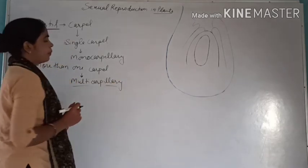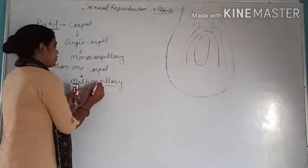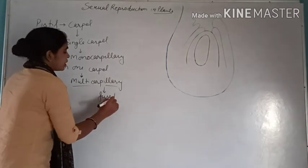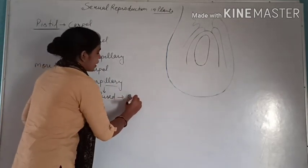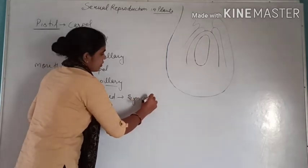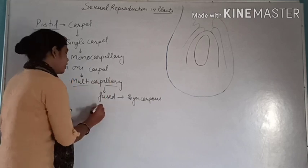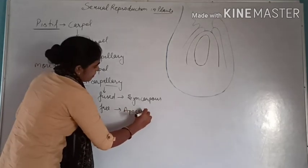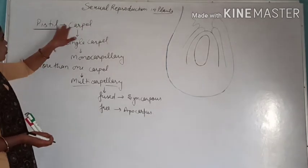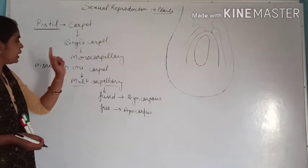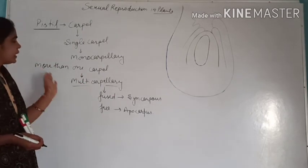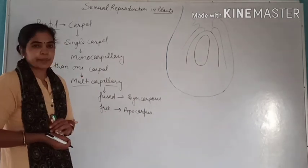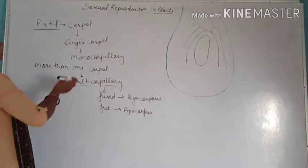Now in case of a multicarpillary flower, if the carpels are fused, in that case we will call them syncarpous. And if the carpels are free, then apocarpous. So to summarize: single carpel is monocarpillary, more than one carpels is multicarpillary; if fused then syncarpous flower, if free then apocarpous flower.